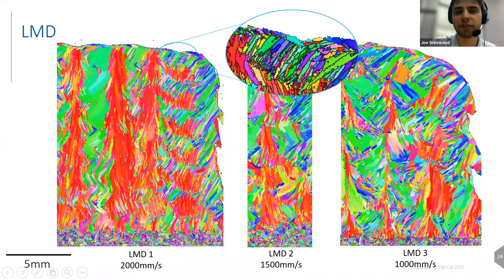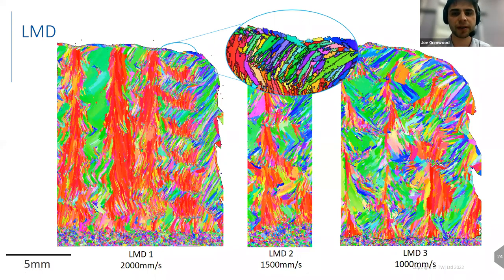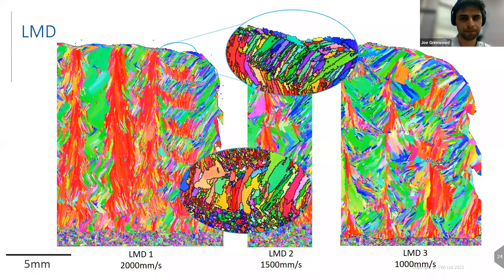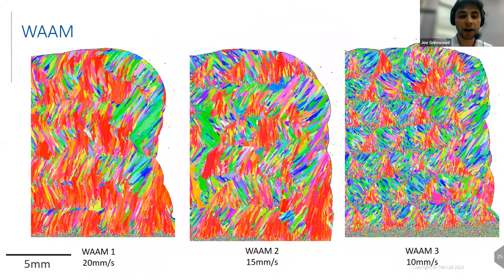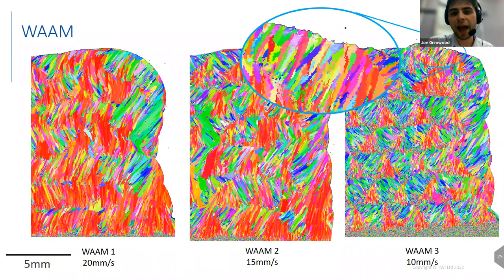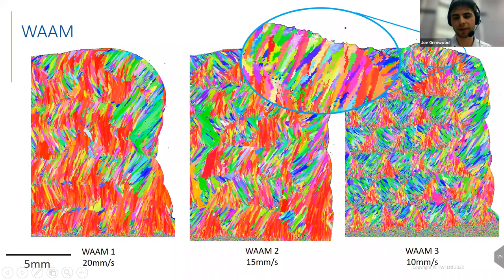You tend to get a small equiaxed grain structure right near the surface, likely because of quite rapid cooling as it's exposed to the environment. You can see this skin on the top. It's also interesting that there doesn't seem to be any correlation between the orientation of the actual substrate at the bottom and the first structures you get within the build. For wire arc builds, similarly, a lower travel speed tends to give a more refined grain structure, and you can see more clearly when blown up that there doesn't seem to be much relationship between the grains forming in one melt pool compared to the next.